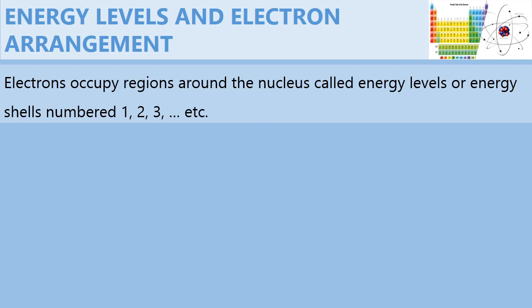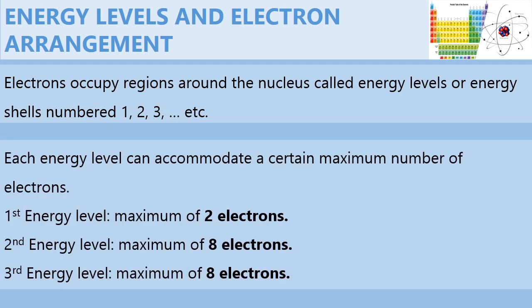These energy shells are numbered as 1, 2, 3, and so on. Energy level number one is the one that is closest to the nucleus, followed by the second, third, fourth, fifth, and so on.